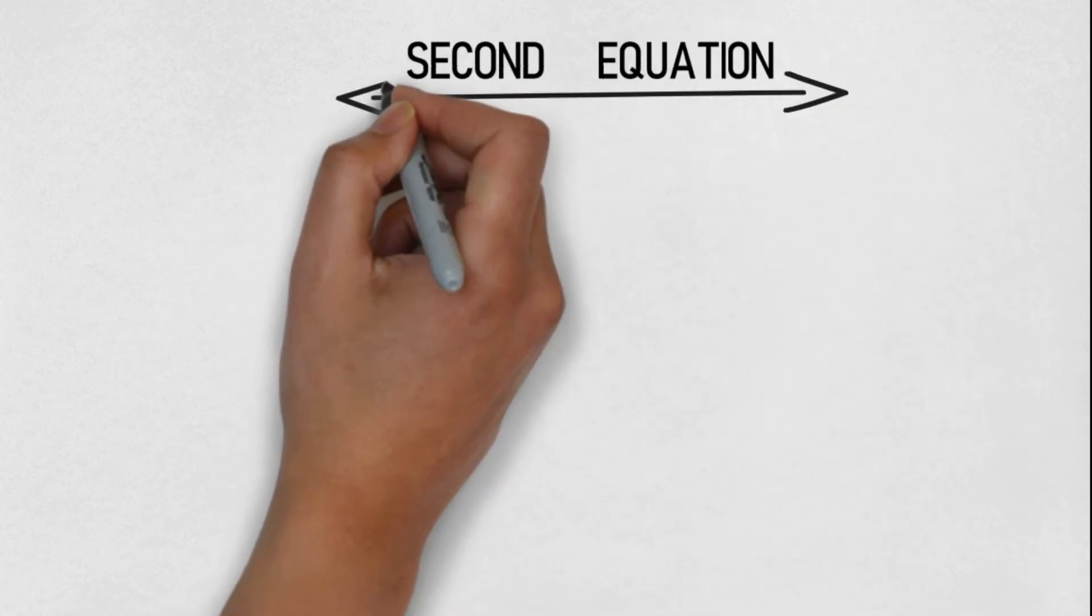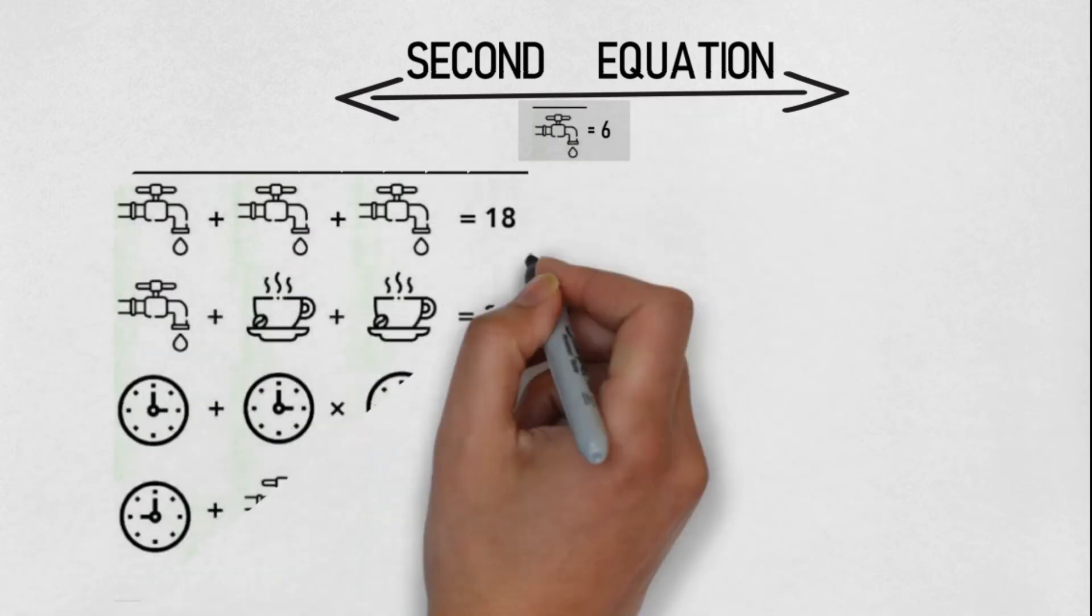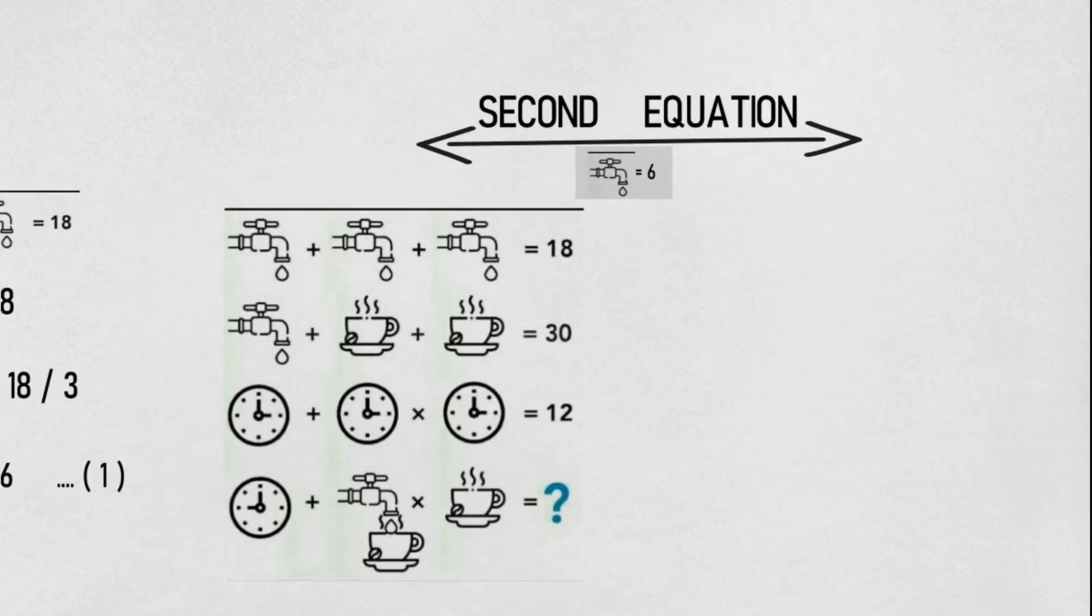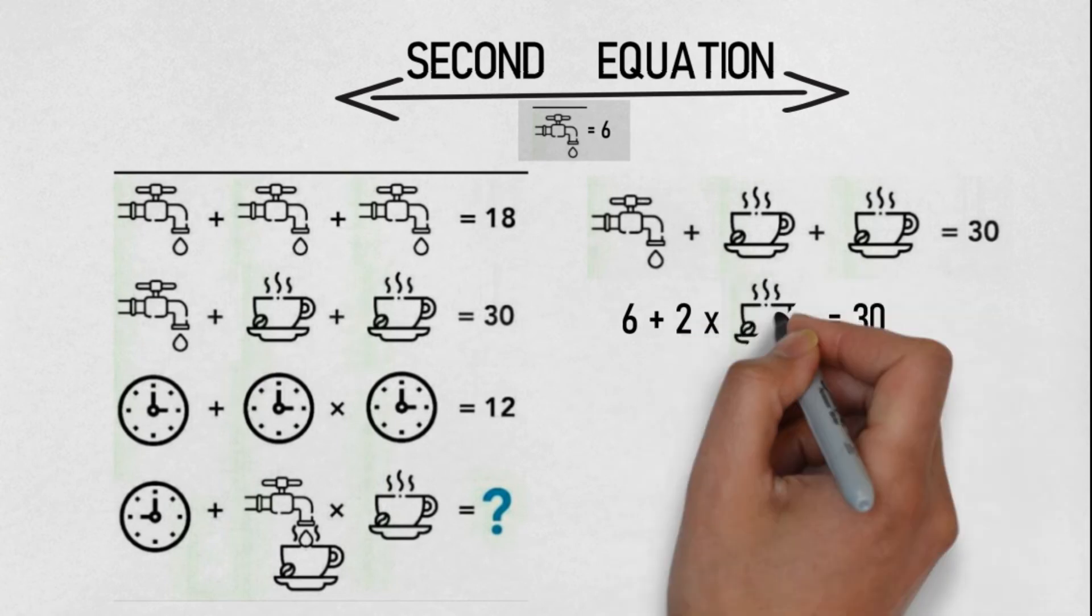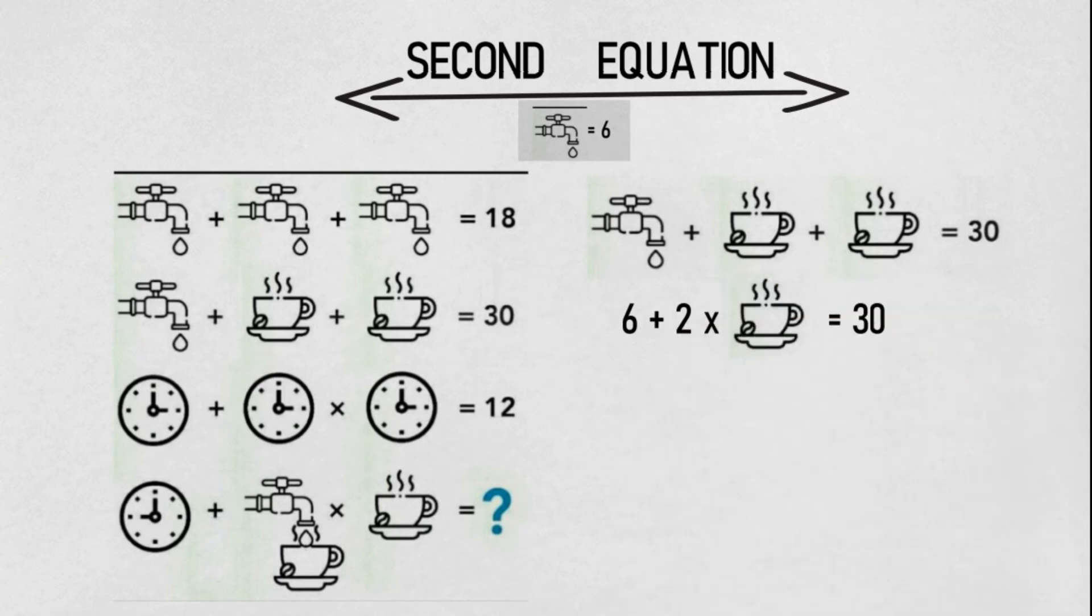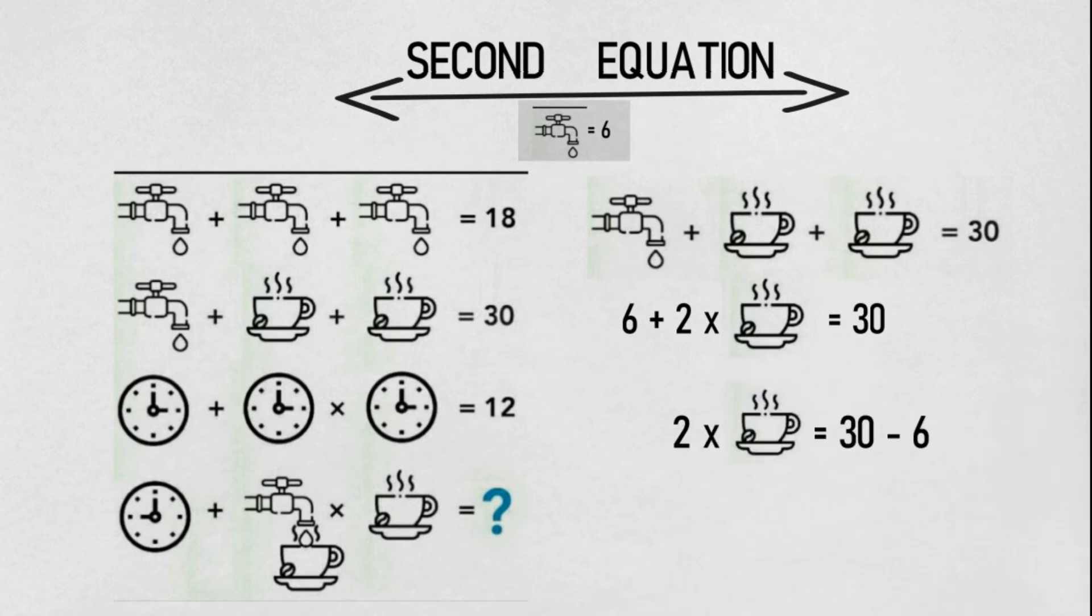Now jumping on to our second equation. We have one tap value that is equal to 6. Putting the tap equal to 6 in the second equation, we have one tap plus two coffee mugs equal to 30. So 6 plus 2 times coffee mug is equal to 30. Taking 6 to the right side, 2 times coffee mug is equal to 30 minus 6. One coffee mug is equal to 24 divided by 2, that is equal to 12.